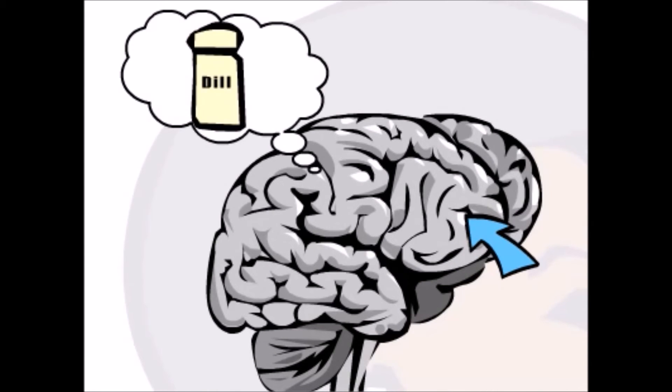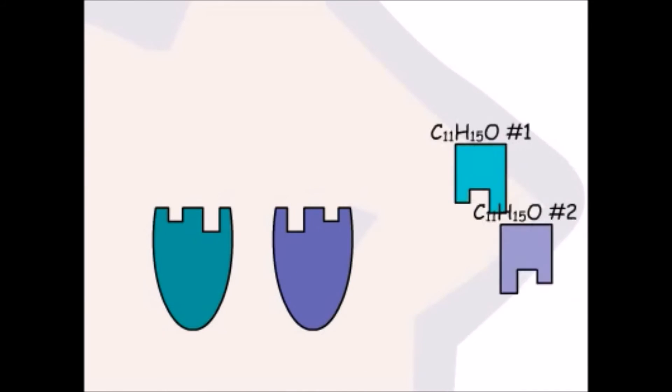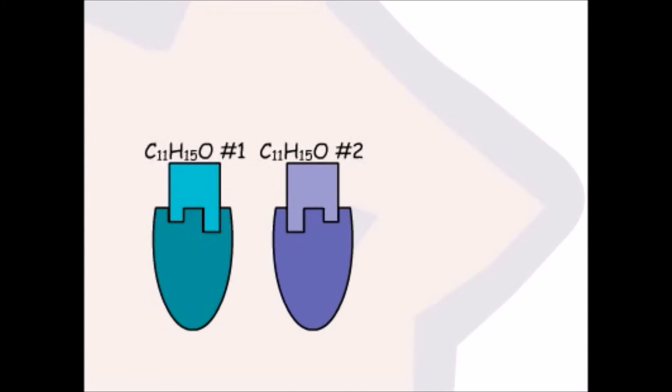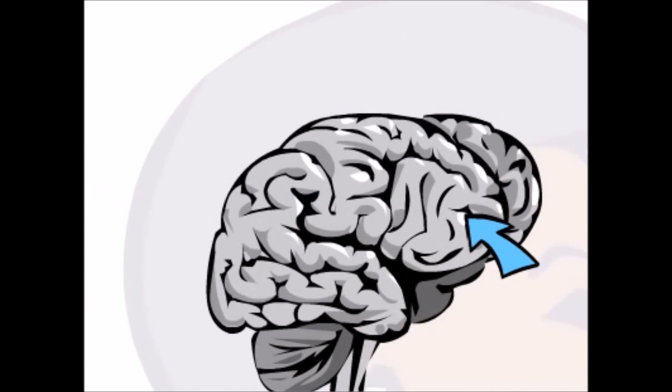Strangest of all is what happens when both molecules are present. We call a 50-50 mix of two optical isomers a racemic mixture. One of the molecules is recognized by one receptor and one is recognized by a different receptor. For reasons neuroscientists don't fully understand, binding to both receptors at once sends a message to the brain that says ginger root.